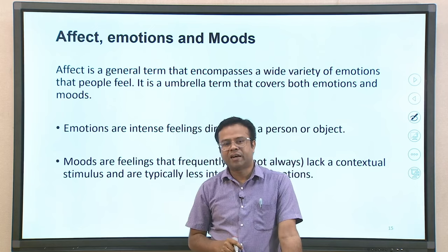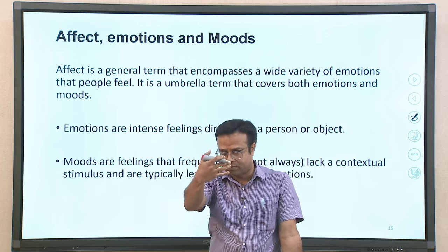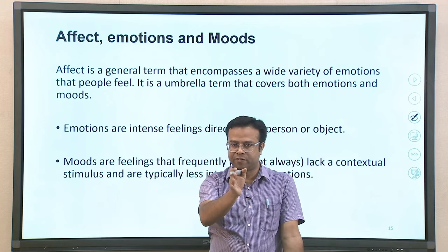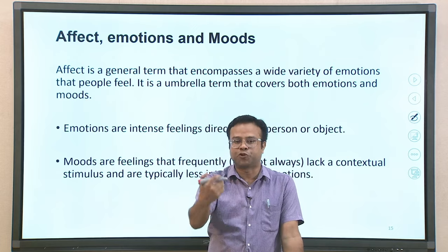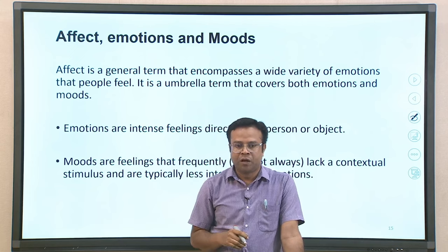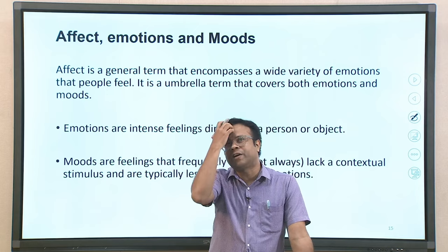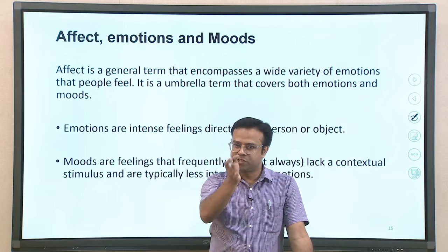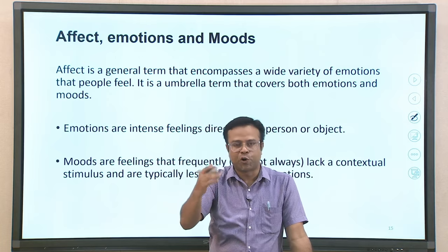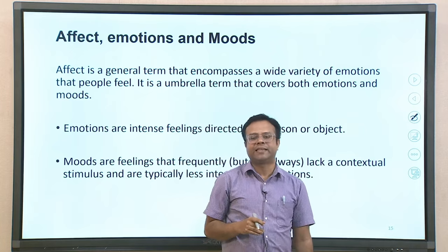Under affect, the next term is emotions. Emotions are intense feelings directed at a person or object — generally more directed. For example, somebody insulted you and you expressed your anger towards that person. It is a very directed, specific, situation-oriented feeling. That is called an emotion. Moods are also feelings, but generally they lack a contextual stimulus — they may not have any specific reason. You may feel a bad mood or good mood without a very specific context, and moods are generally less intense than emotions.